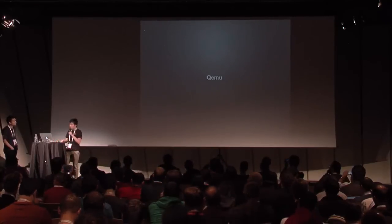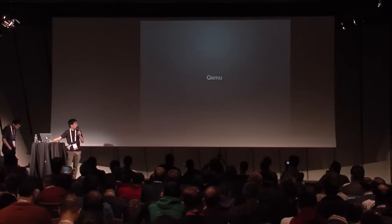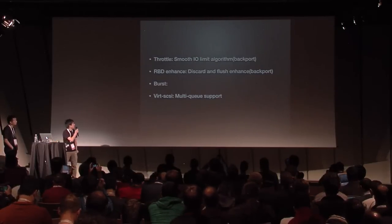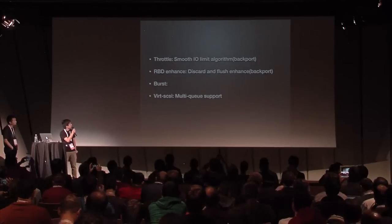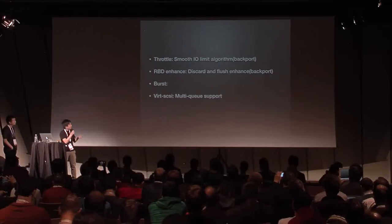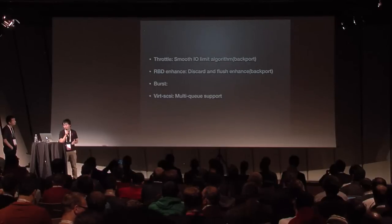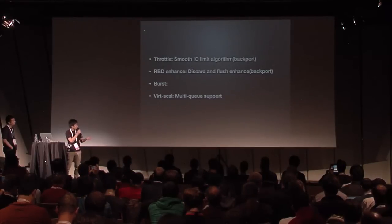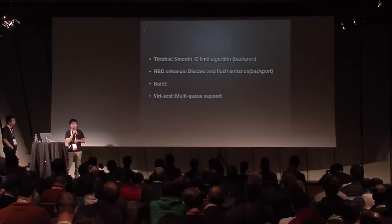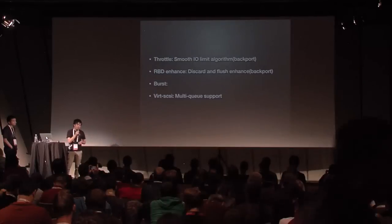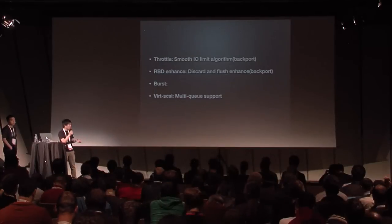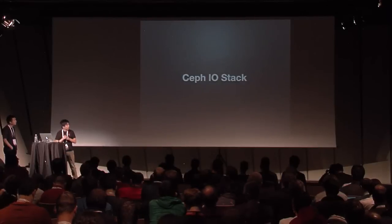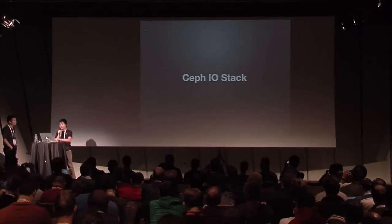Next, we will introduce our QEMU backport and some enhanced features, mainly including smooth IO limiter, discard and flush request enhancements, IO bus enhancements, and multi-queue support. Multi-queue support is mainly used by QEMU so we can get higher IOPS performance for QEMU and VMs. Next we will dive into the Ceph IO stack.